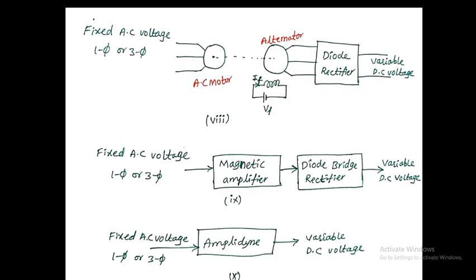The eighth one: the AC motor shaft is connected to an alternator (AC generator) instead of a DC generator. The AC motor runs and delivers mechanical energy through the shaft to the alternator, which gives controlled AC voltage. That controlled AC voltage is connected to a diode bridge rectifier, giving controlled or variable DC voltage at the output.